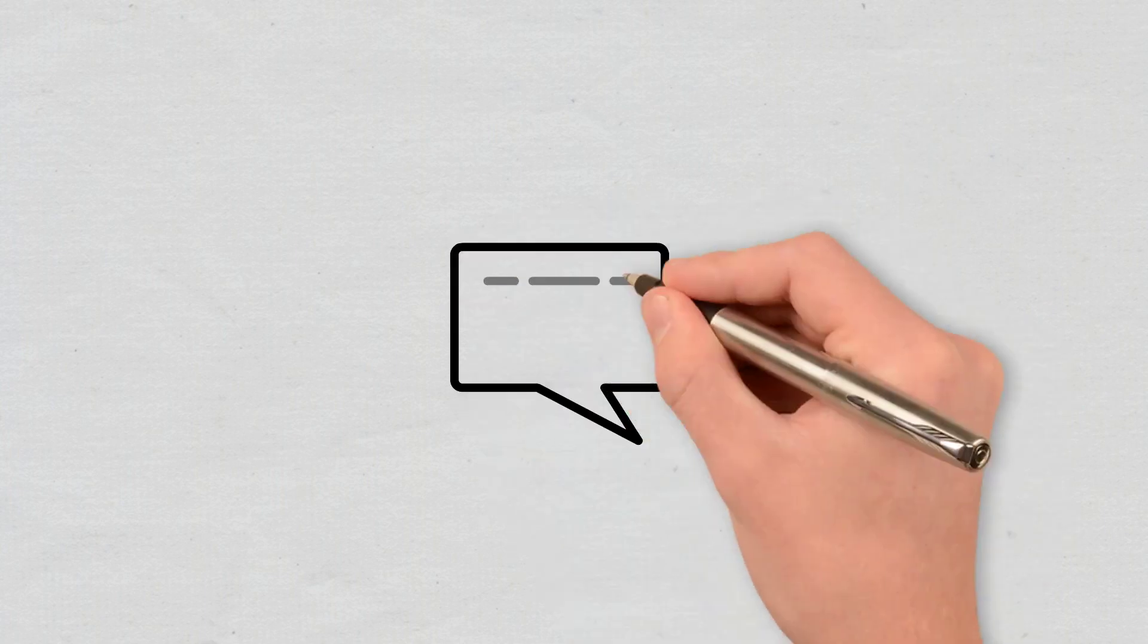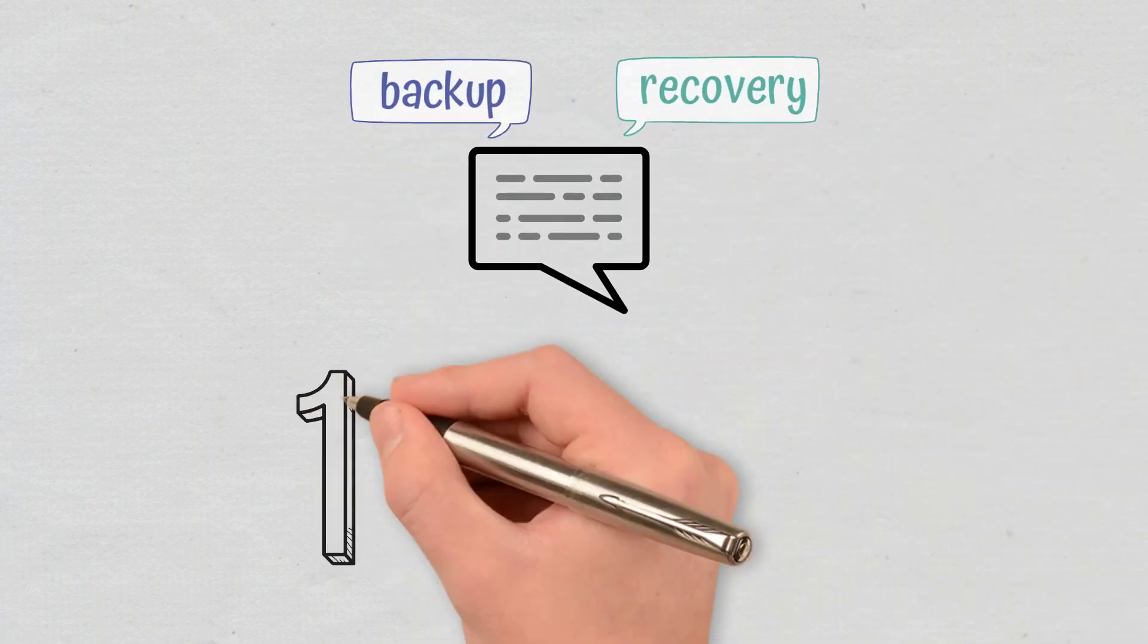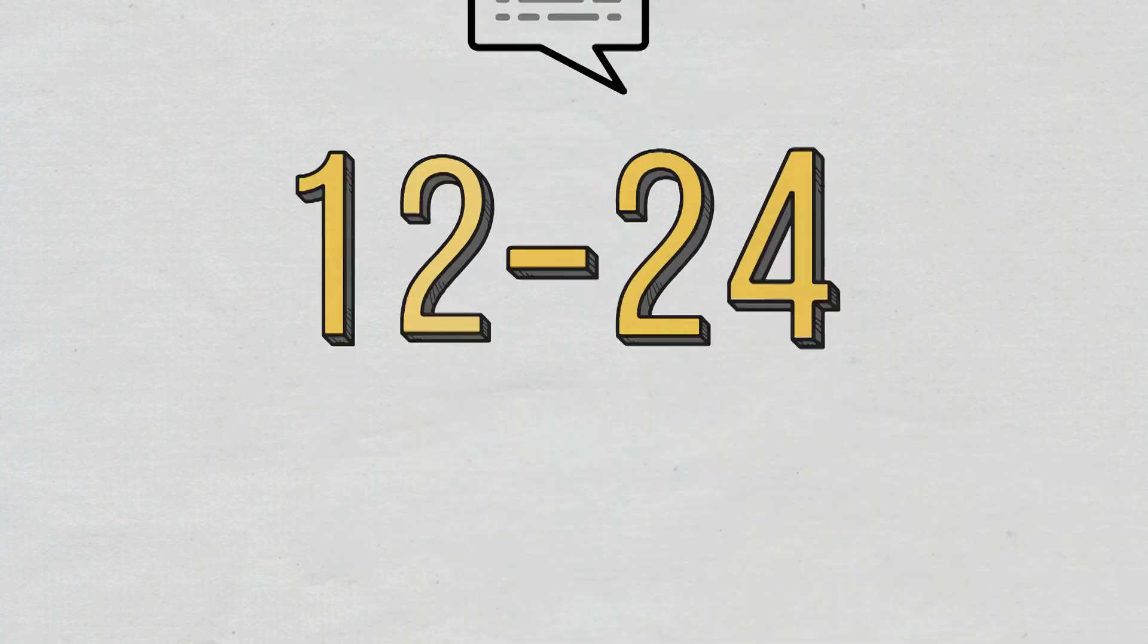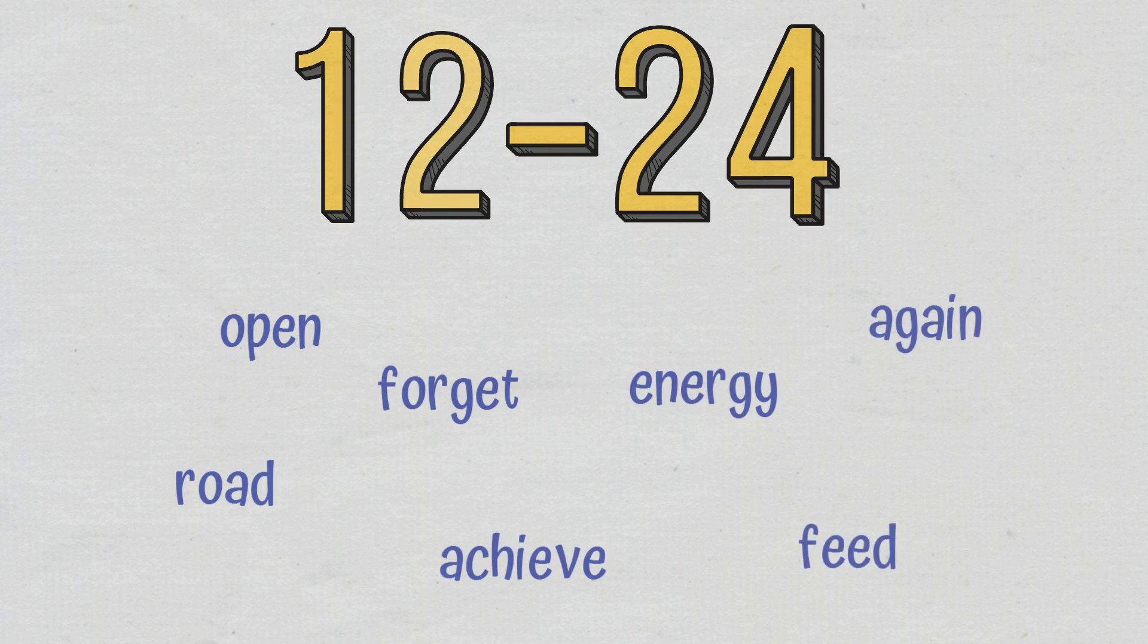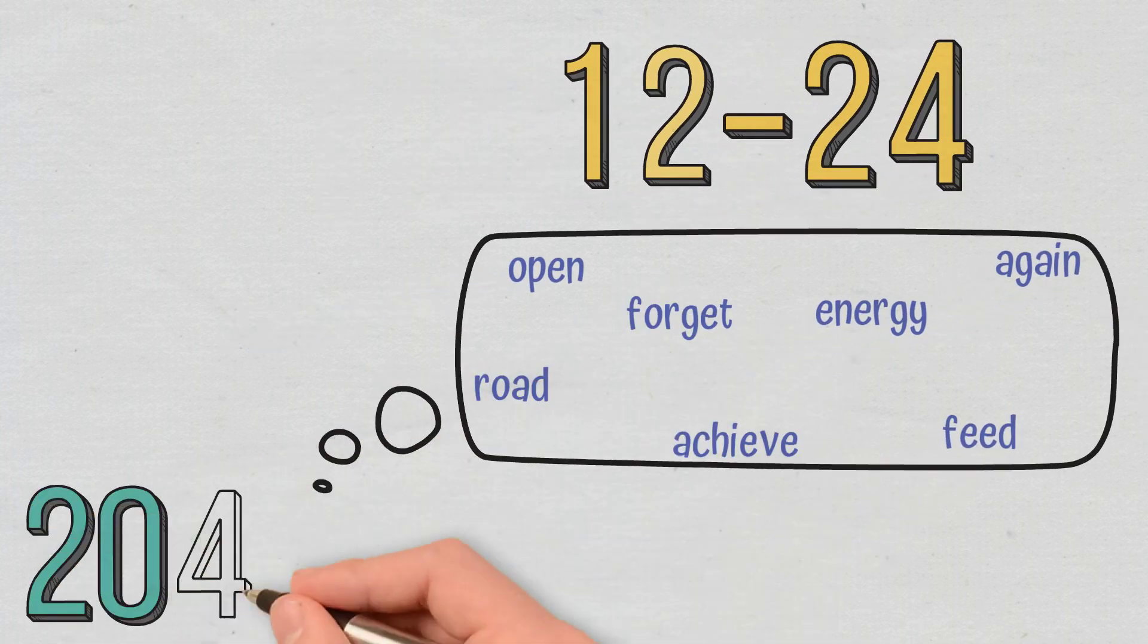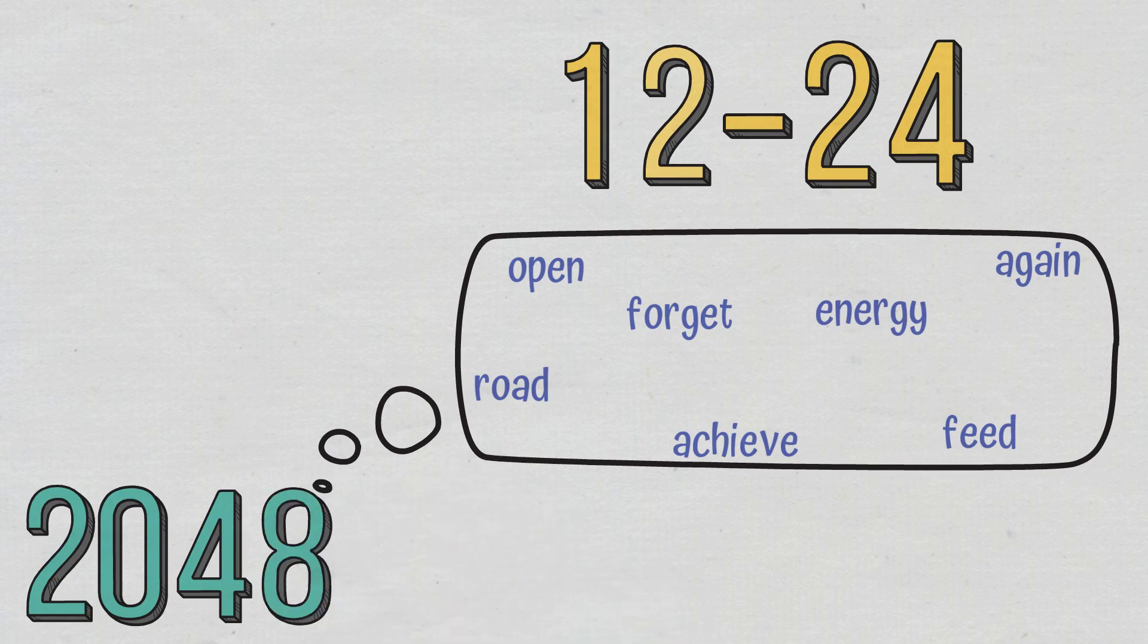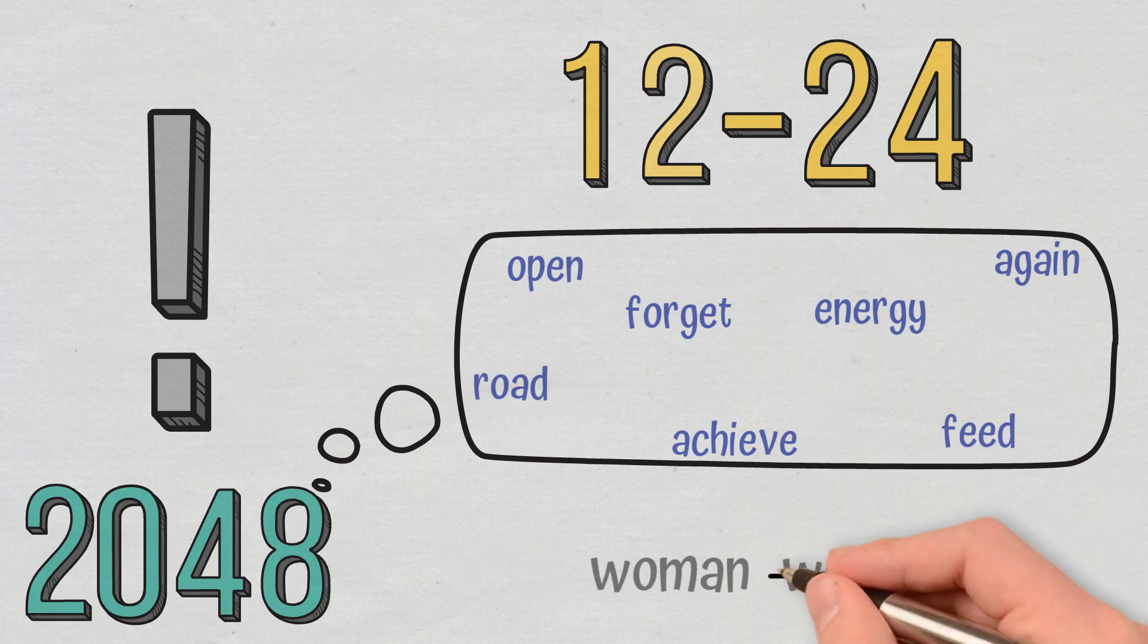A seed phrase is also known as a seed recovery phrase, or a backup seed phrase, and it includes 12 to 24 simple words such as open, road, forget, achieve, energy, again, feed, etc. These words are pulled from a list of 2048 words, and they are not similar. So there won't be pairs such as woman and women in the same seed phrase, and the reason for this is to avoid errors.